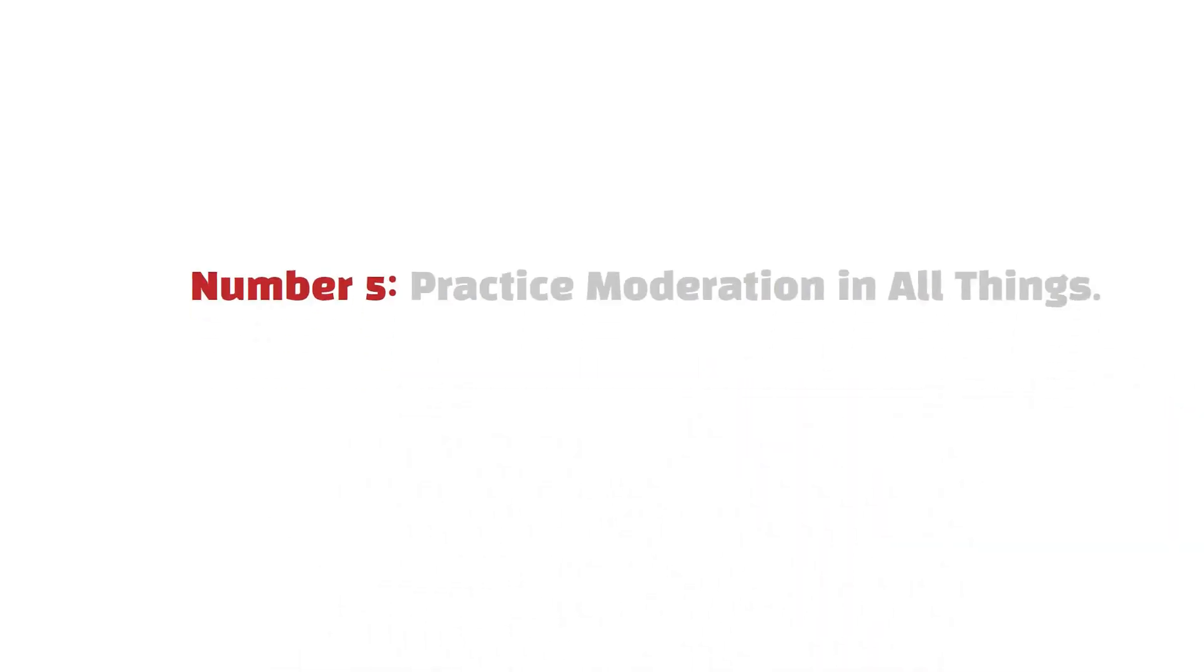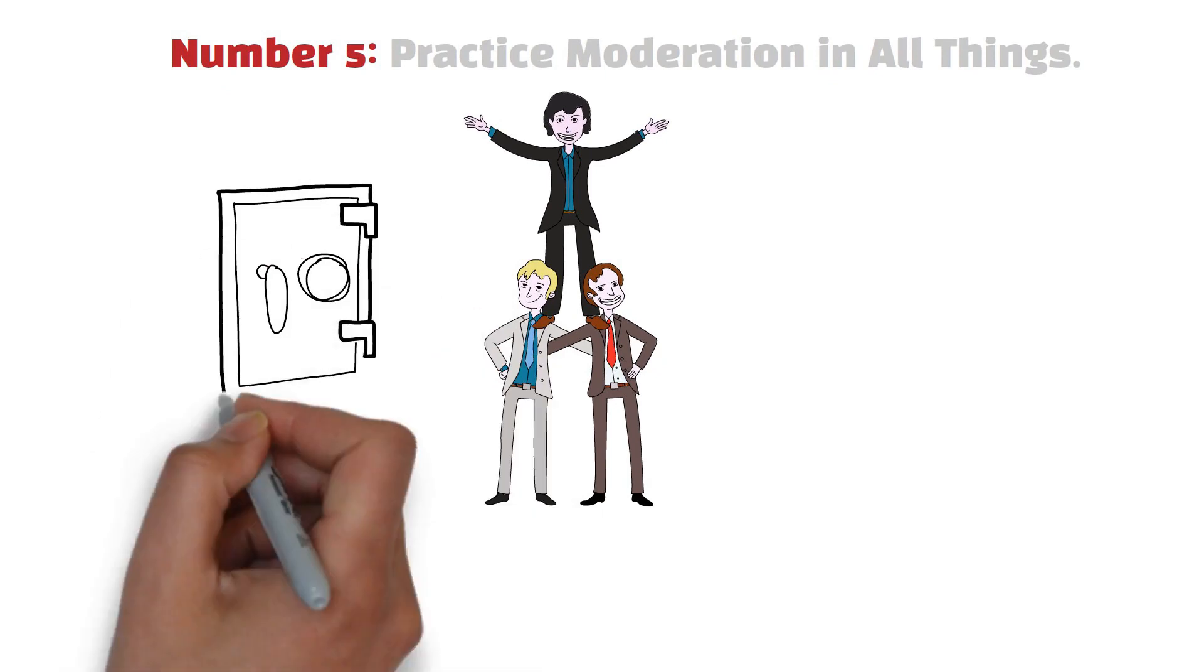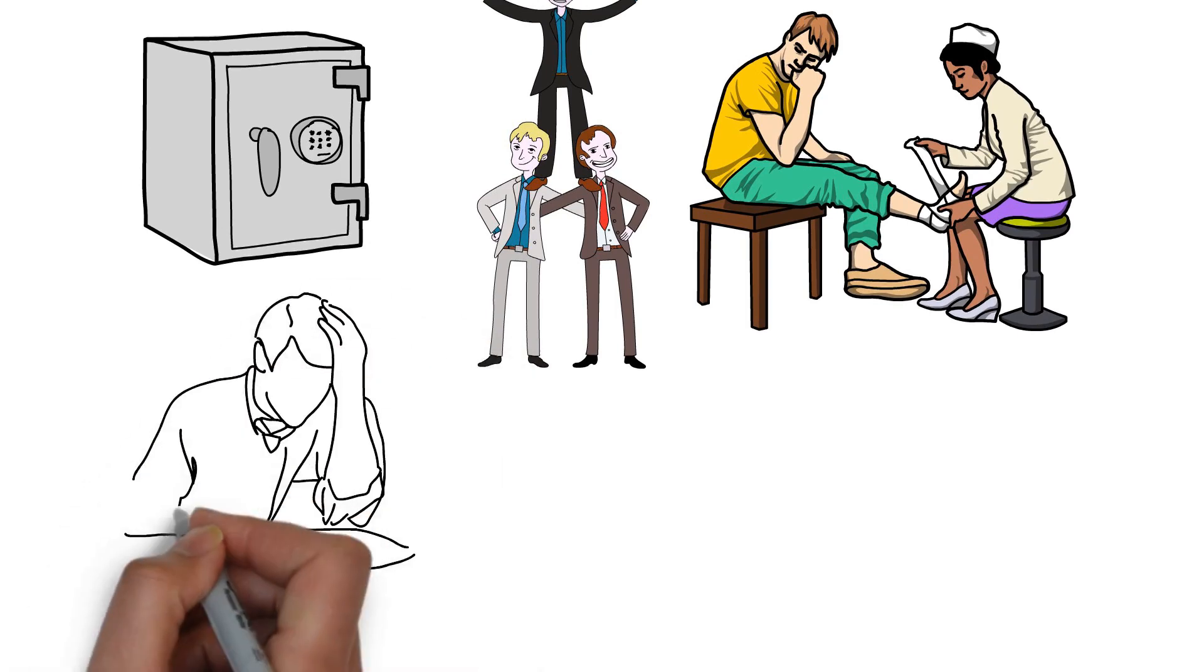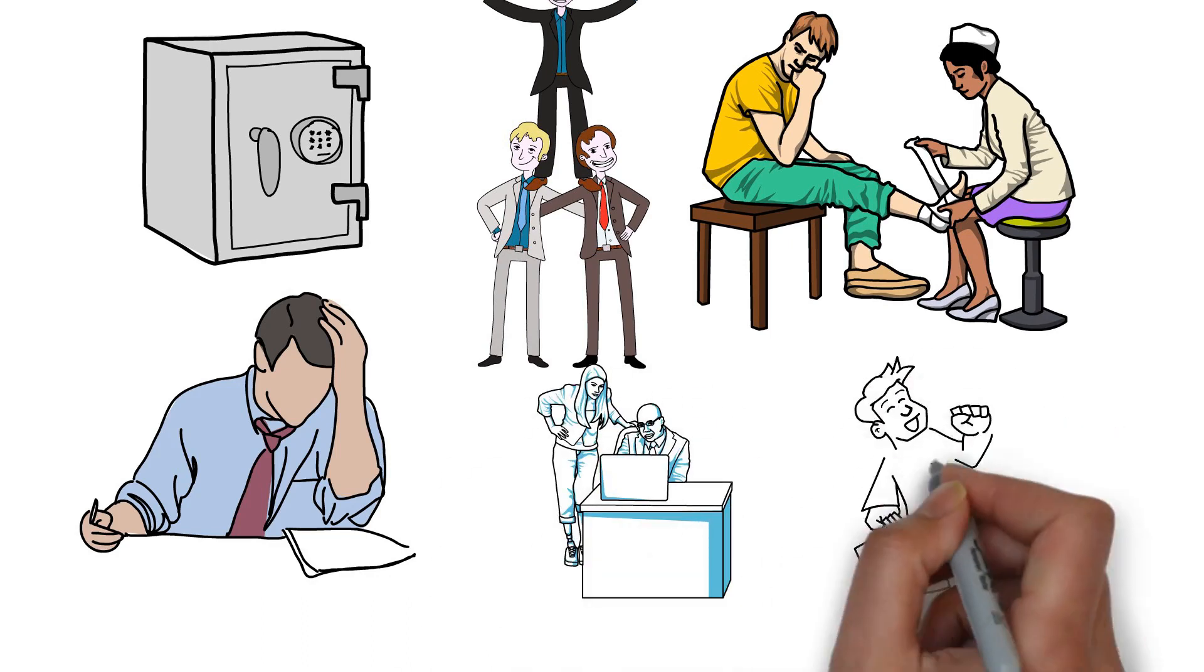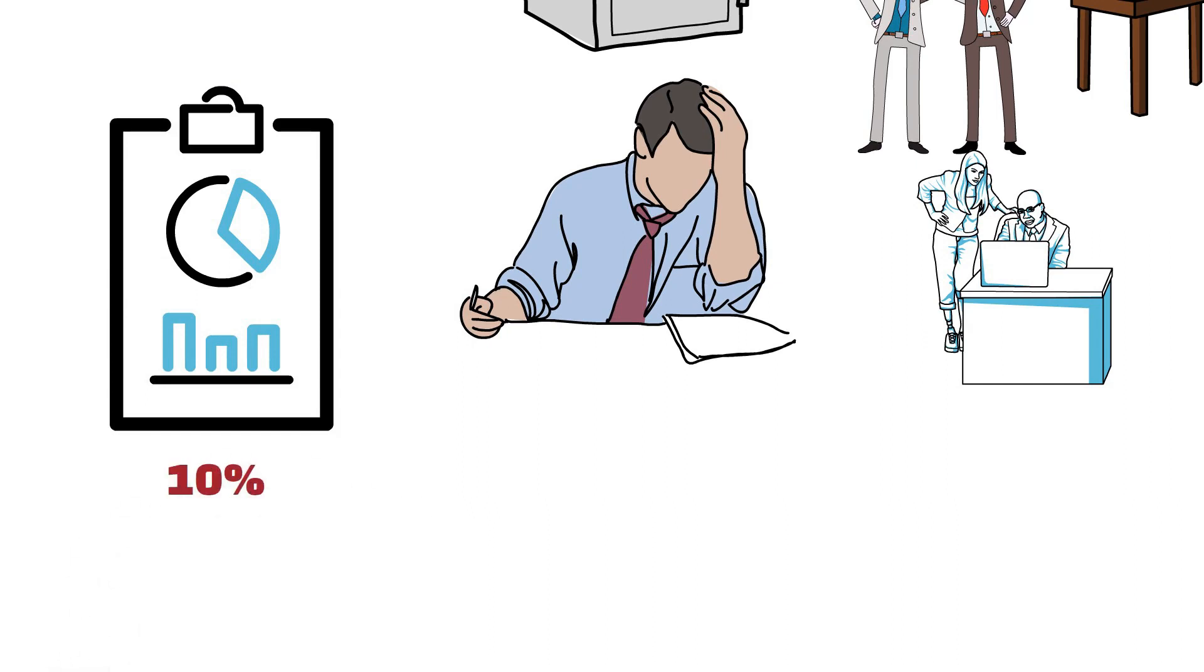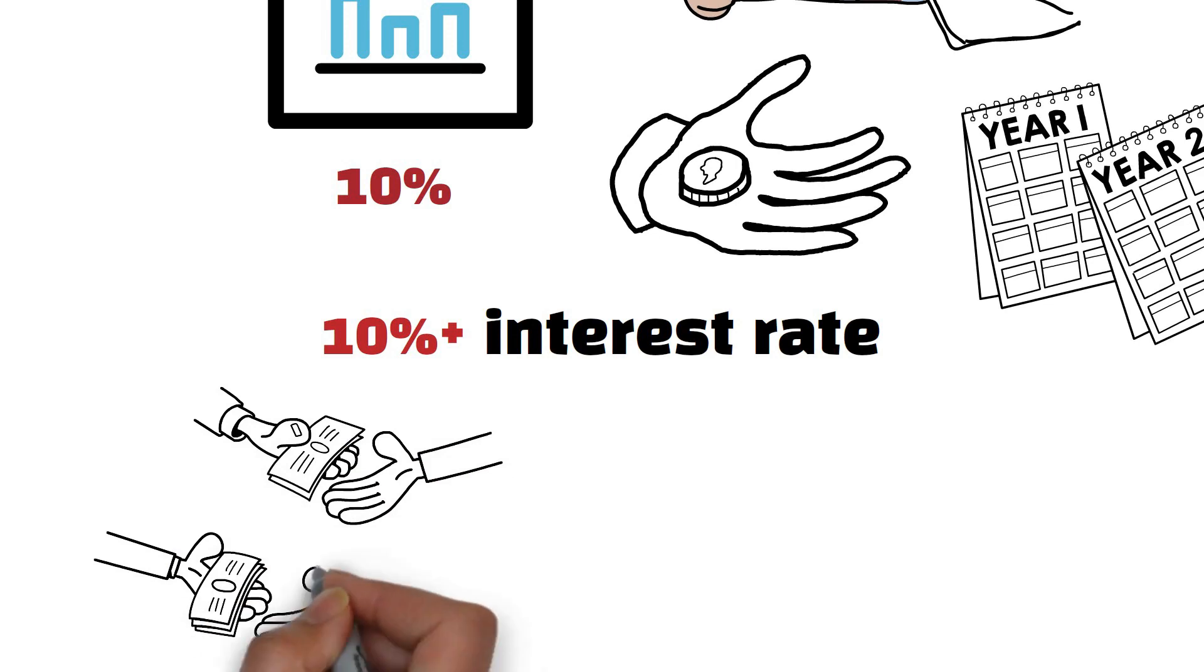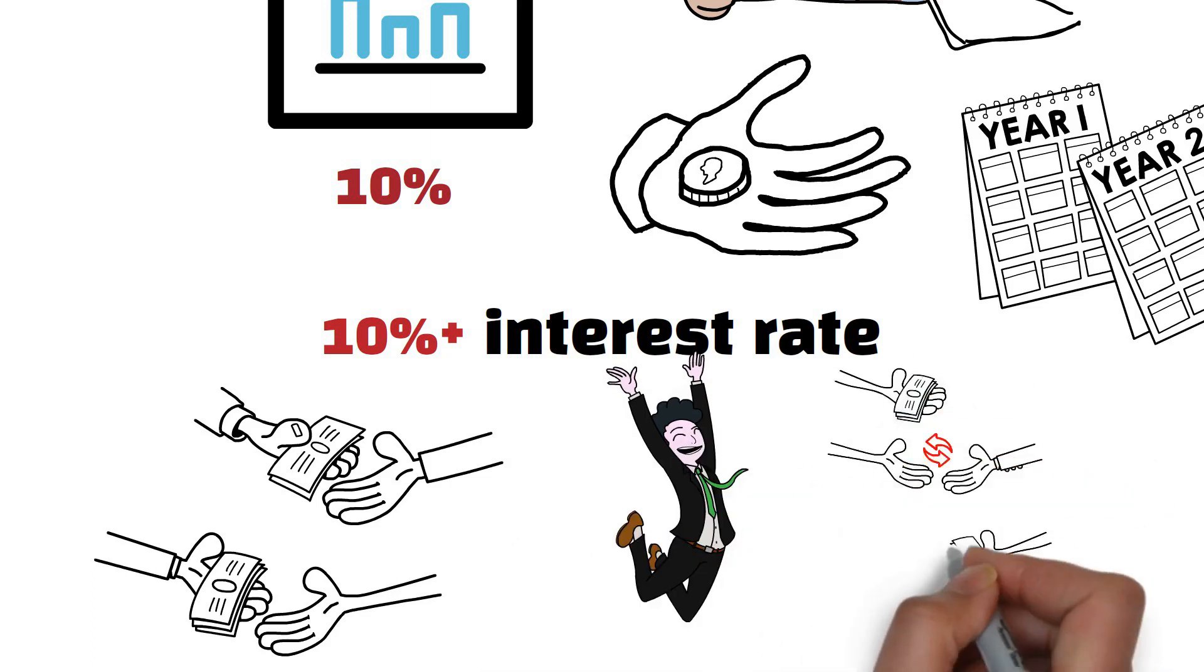Number 5. Practice moderation in all things. In the unpredictable ballet of life, practicing moderation emerges as a graceful pirouette that safeguards your financial well-being. Expecting the unexpected becomes an art form, acknowledging that things can break, jobs can vanish, and emergencies may knock unannounced. Yet, within this acknowledgement lies the power to adapt and thrive. We don't sulk in the face of adversity. Instead, we rise each day with an unwavering commitment to performance. Enter the stage of debt management, where prioritizing high-interest debts exceeding 10% is akin to reclaiming control. Paying off debts becomes not just a financial strategy, but a declaration of independence. The wisdom lies in recognizing that consistently beating a 10%-plus interest rate through long-term investment is a Herculean task. As the shackles of debt are dismantled, a symphony of financial freedom begins, freeing up cash flow to compose the future you desire.